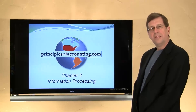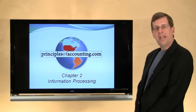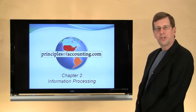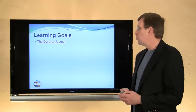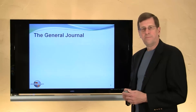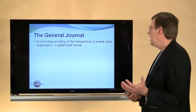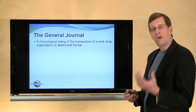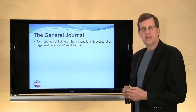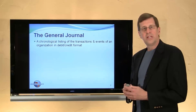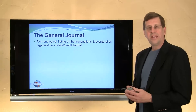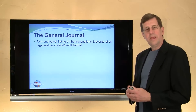I'm Larry Walther and this is Principles of Accounting.com Chapter 2. In this particular module we will be looking at the General Journal. The General Journal is a chronological listing of transactions and events for a particular organization described in their debit credit form.